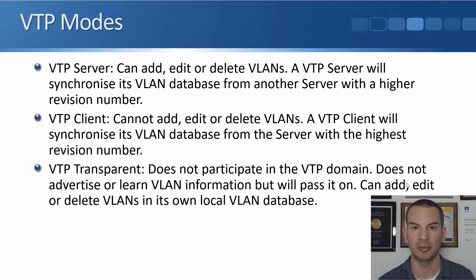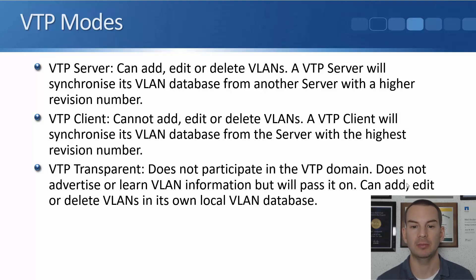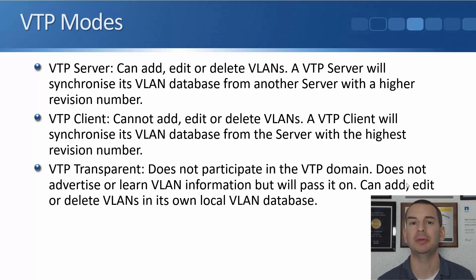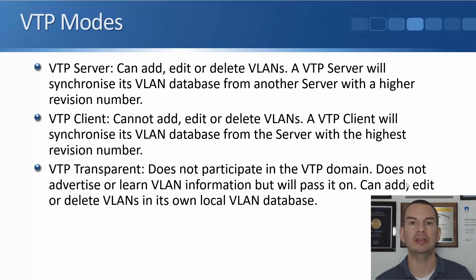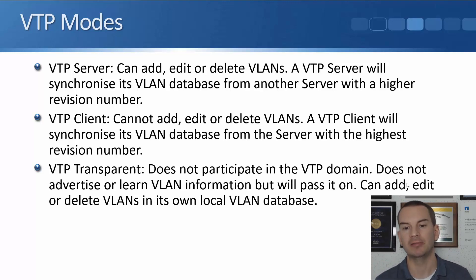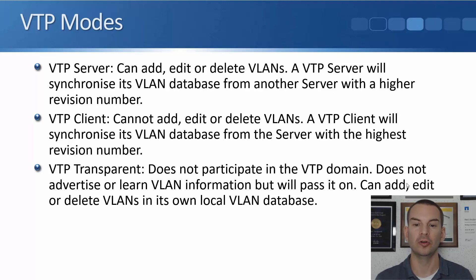Whichever server has the highest revision number acts as the master. On a VTP client, you cannot add, edit, or delete VLANs — it can only get information from a server. A VTP client synchronizes its VLAN database from the server with the highest revision number. A switch configured as VTP transparent does not participate in the VTP domain; it does not advertise or learn VLAN information, but it will pass it on. On a VTP transparent switch you can add, edit, or delete VLANs in its own local VLAN database — it's just independent on its own.